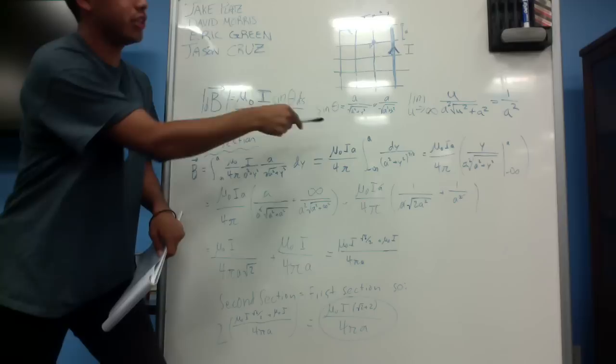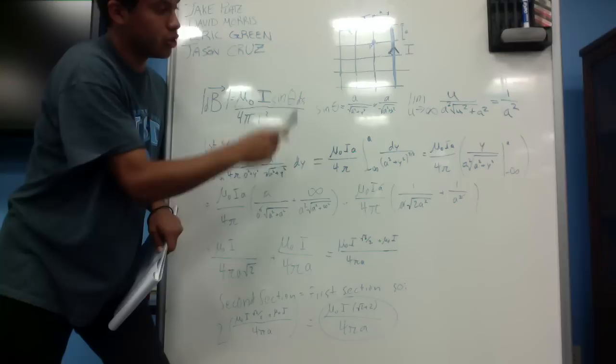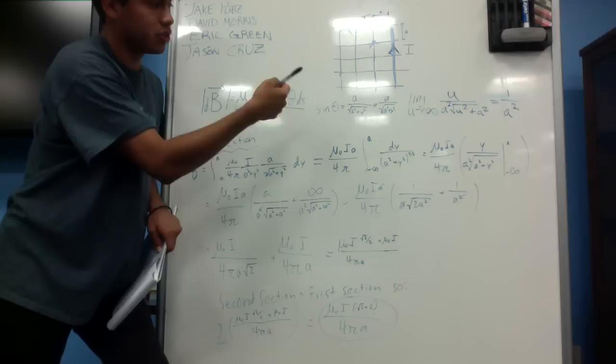each of these square lengths is given to us as a. So for sine theta, we found that from point P, it's going to be a over the square root of a squared plus y squared, because that gives us